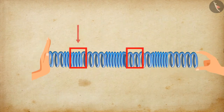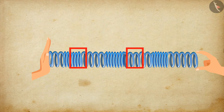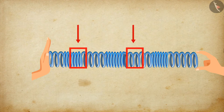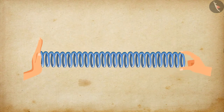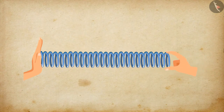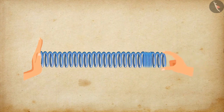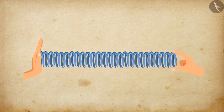Some regions of the coils will become closer, while some regions of the coils will become further apart. The closer regions of the coil are compressions, and the further regions of the coil are rarefactions. Now compare the propagation of disturbance in the slinky with the propagation of sound in a medium.